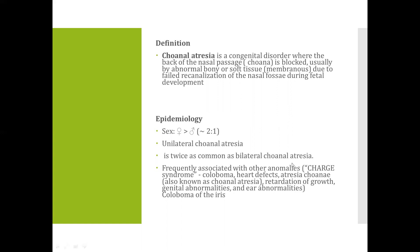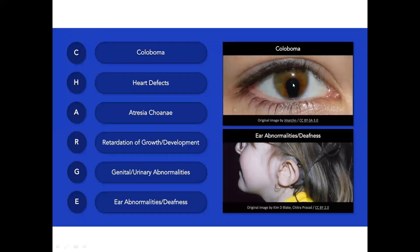CHARGE syndrome comprises: C - coloboma, H - heart defects, A - atresia choanae (which is our choanal atresia), R - retardation of growth or development, G - genital or urinary abnormalities, and E - ear abnormalities and deafness. This diagram shows a coloboma and ear abnormalities.